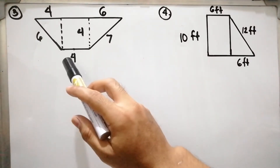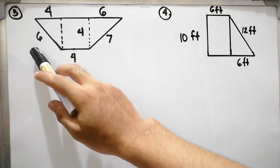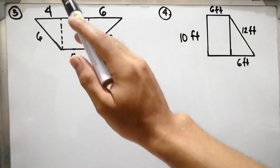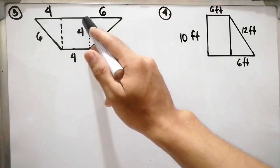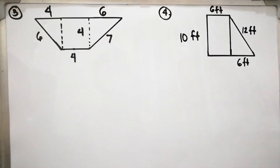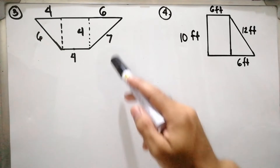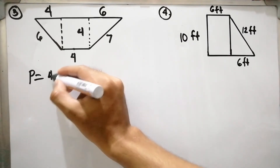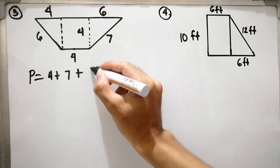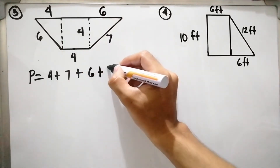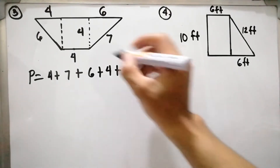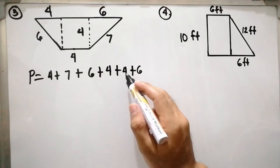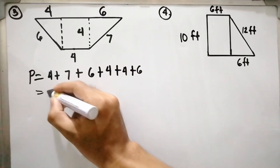For example number 3, the measures of the sides are 4, 7, 6, 4, and 6 units. We have a missing length of a side. This missing length is equal to the opposite side since this is a square, so it is also 4 units. For the perimeter, P equals 4 plus 7 plus 6 plus 4 (the missing side) plus 4 plus 6. So 4 plus 7 is 11, plus 6 is 17, plus 4 is 21, plus 4 is 25, plus 6 equals 31 units.